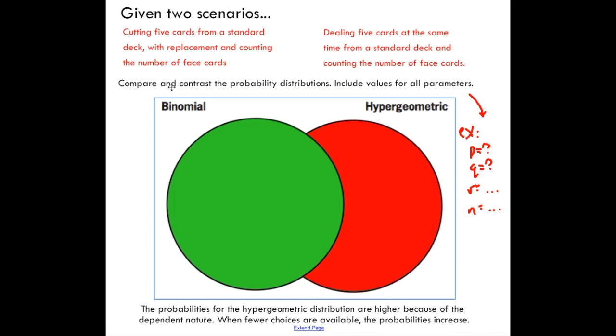What I want you to do is compare and contrast the probability distributions here. In this Venn diagram, you're going to include all values for parameters. And the parameters would be, for example, the probability of a success, failure, number of trials, and the size of the population.